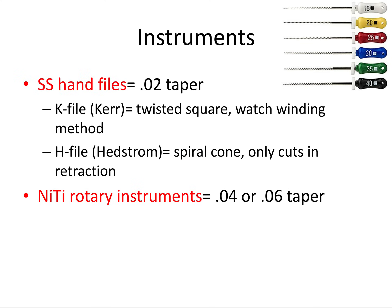Now that we have the canals accessed, what do we instrument them with? By instrument, I mean to remove the diseased pulp tissue, shave infected dentin from the canal space, and shape the canal so we can fill it properly. First, we have the stainless steel hand files. They have a 0.02 taper, meaning the file gets 0.02 millimeters thicker in diameter for each one millimeter you go down from the tip.